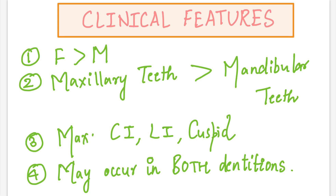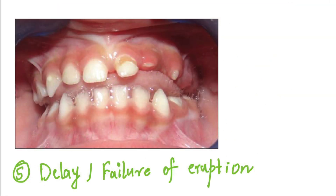Moving on to the clinical features: this condition affects females more commonly than males, and maxillary teeth are affected more commonly than mandibular teeth. The teeth most commonly affected are the central incisors, lateral incisors, and cuspids — that is, the maxillary anterior region. Both the primary as well as the permanent dentition may be affected, and the teeth look abnormal in terms of their morphology.